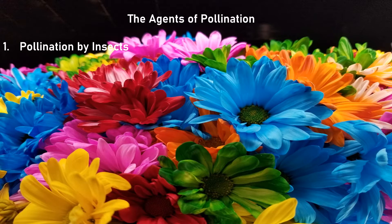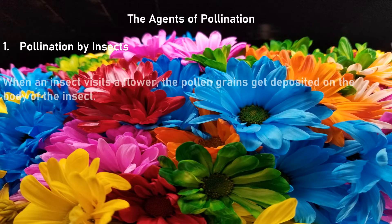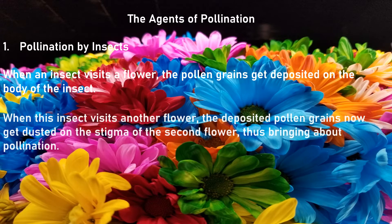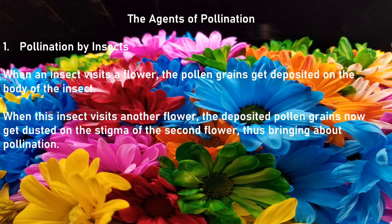Pollination by insects. When an insect visits a flower, the pollen grains get deposited on the body of the insect. When this insect visits another flower, the deposited pollen grains now get dusted on the stigma of the second flower, thus bringing about pollination.